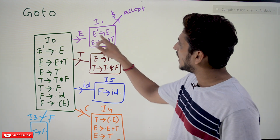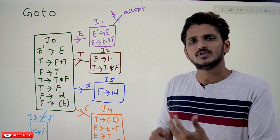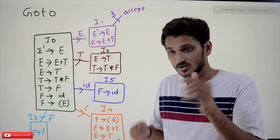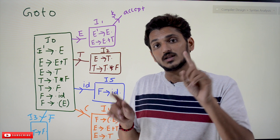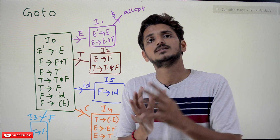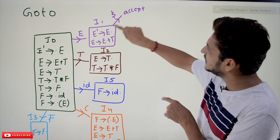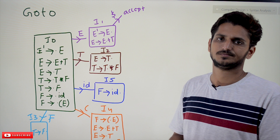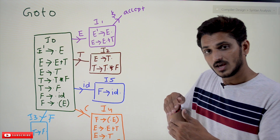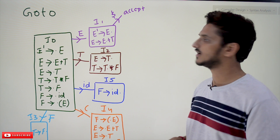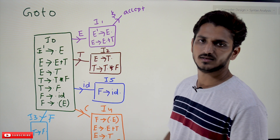Now understand why we added the augmented production E' → E. E' → E• means the first starting production is complete. In our previous classes we discussed that after completion of the first non-terminal, the compiler adds a dollar symbol, meaning syntax analysis is complete. So on state I₁, if we see dollar, the input is accepted. That is why we added the extra production E' → E — without it, we wouldn't have that completion state.